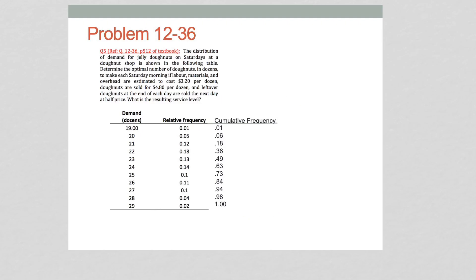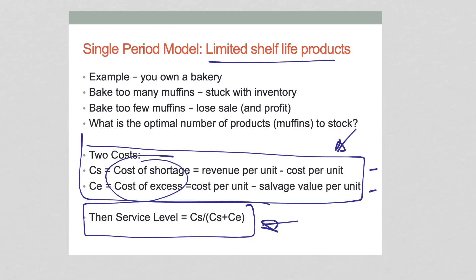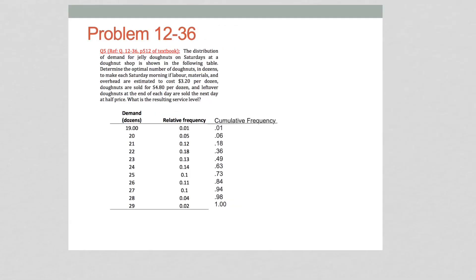Step 2 is we can then calculate our CS. Let's go back to the formula right here. We're going to calculate our CS and our CE. Then we're going to get the service level and we'll be able to get the answer. The first one is CS. CS is equal to revenue per unit minus the cost per unit. Don't forget it's per unit, which equals 4.8 minus the cost of 3.2, which equals 1.6.